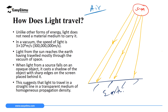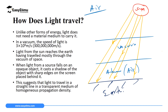Above our atmosphere — where we have air — there is a space called a vacuum, which means it is empty and does not even have air. The fact that light penetrates through this vacuum and reaches our atmosphere proves that light does not depend on a material medium for it to be transmitted.